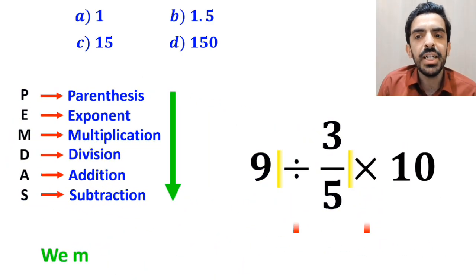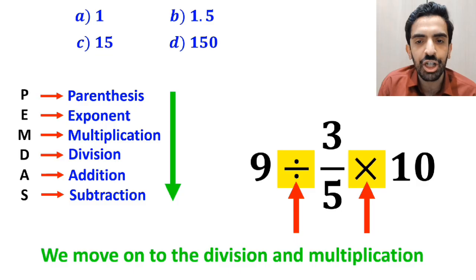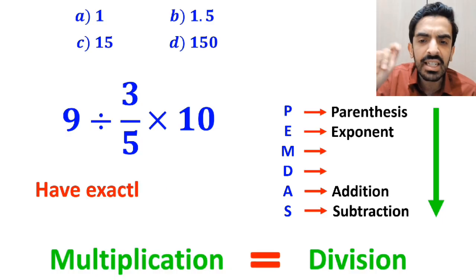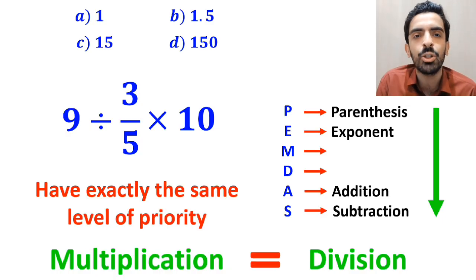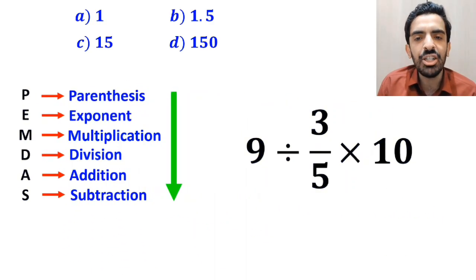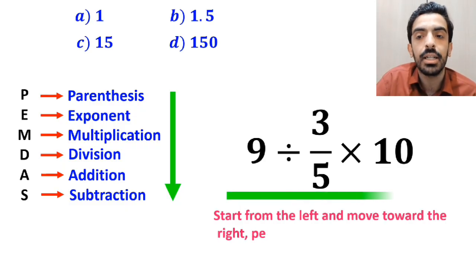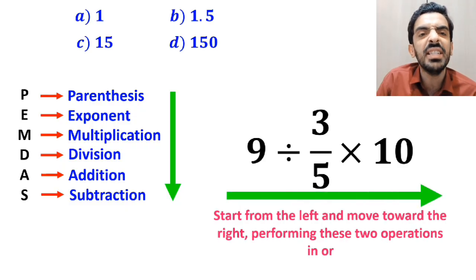In the next step, we need to move on to the division and multiplication. However, it's very important to note that multiplication and division have exactly the same level of priority in the PEMDAS rule. In this situation, the best approach is to start from the left and move toward the right, performing these two operations in order.